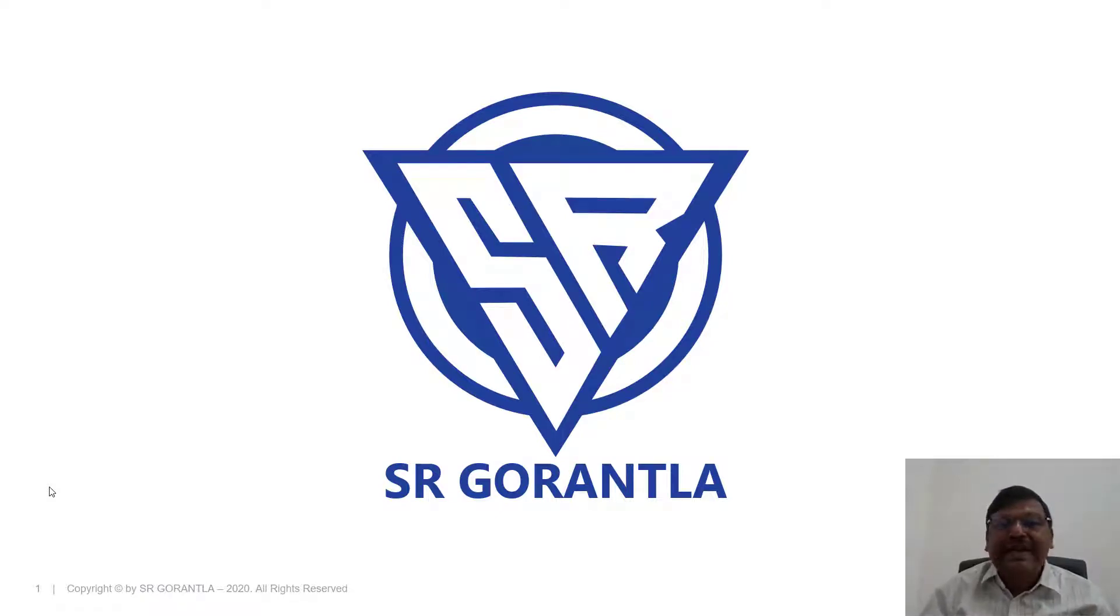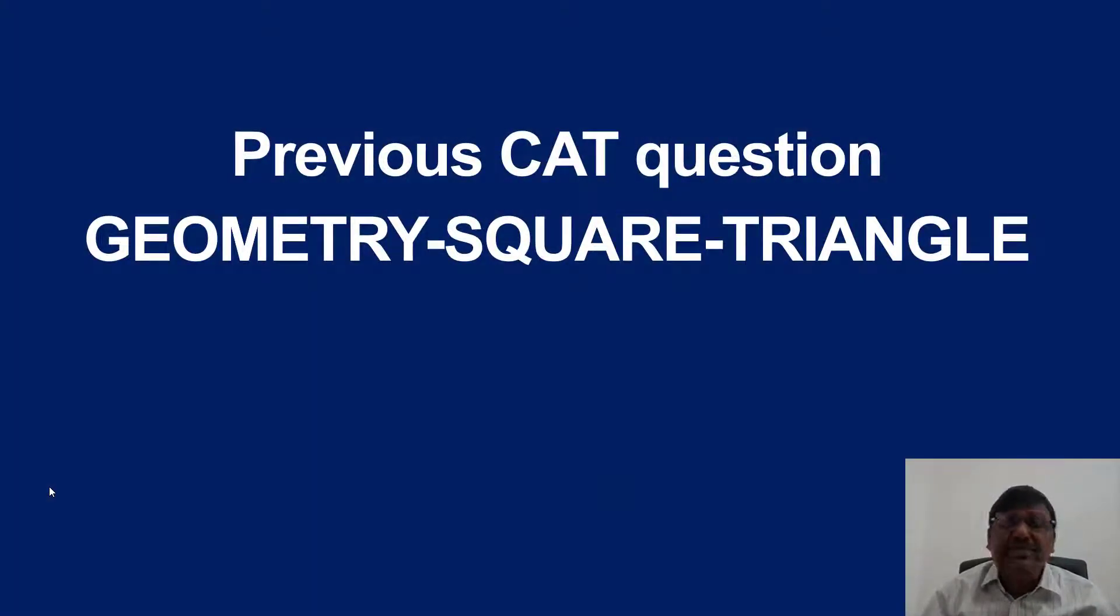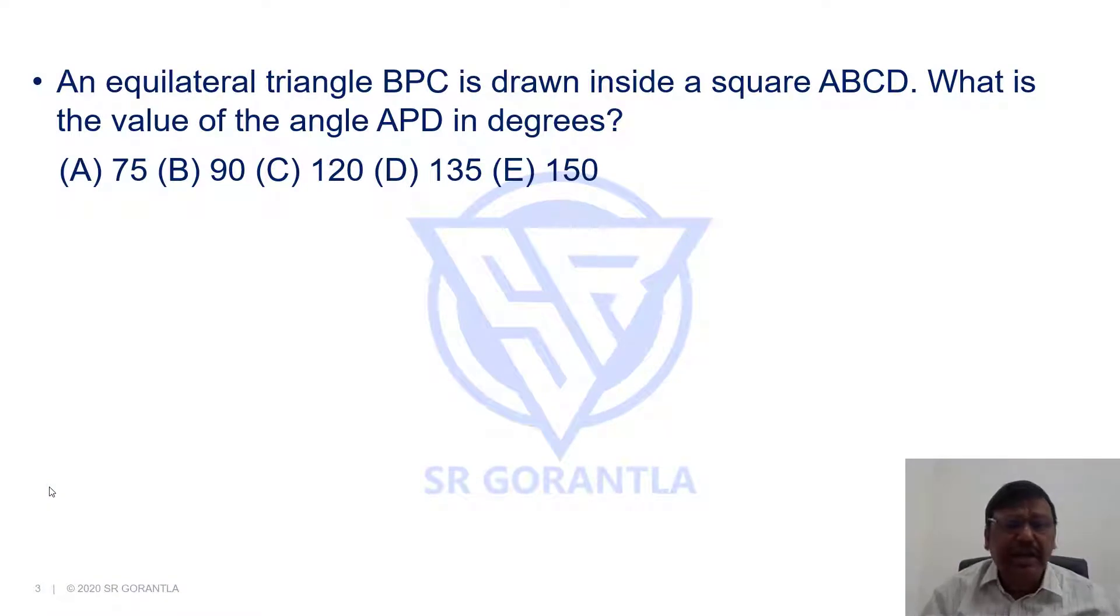Hello students. Welcome to my channel. In this session, we will discuss a previous CAT question, a question on geometry. It involves a square and a triangle. Here comes the question. Can you please make an attempt and then continue watching this.